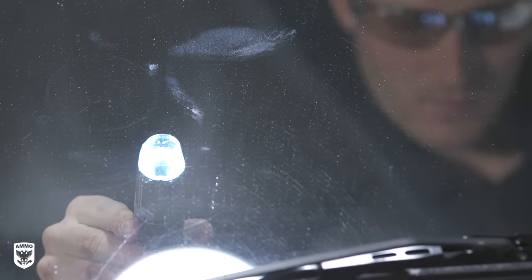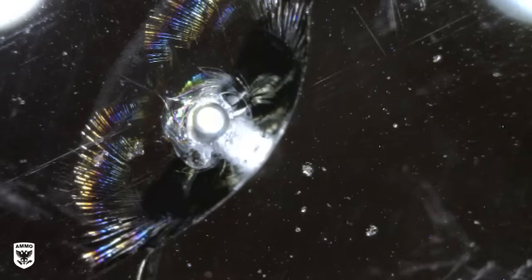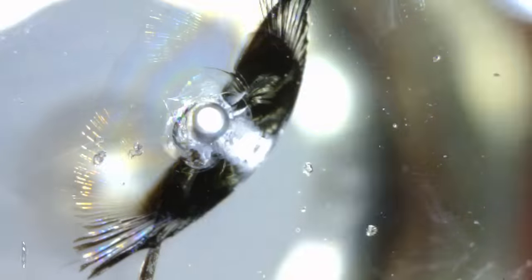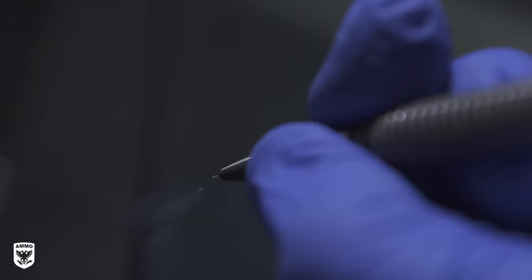The first step to windshield repair is identifying the damage to see if it needs to be repaired. If the glass chip hasn't penetrated and created an air pocket, but is more superficial, no repair is actually necessary.